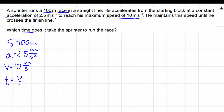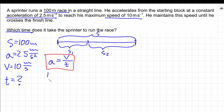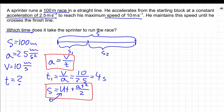Let's draw the total distance traveled by this athlete. We can divide the total distance into two sections: Section S1, in which the sprinter is moving with accelerated motion, and Section S2, in which the sprinter is moving with a constant speed. In the first section, the sprinter is moving with uniformly accelerated motion, so we can use the definition of acceleration, a equals v over t. This allows us to calculate the time for the first section. Knowing the time, we can calculate the length of the first distance using the equation for uniformly accelerated motion. Since the initial velocity is zero, S1 equals at squared divided by 2, which gives us 20 meters.